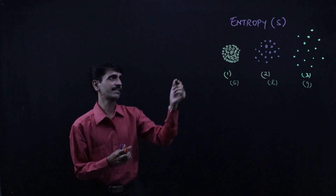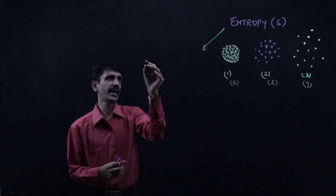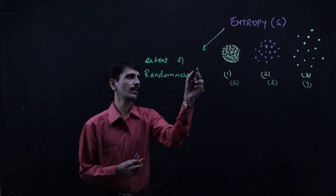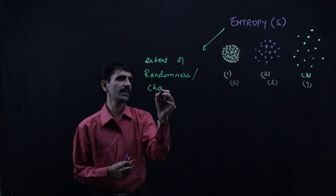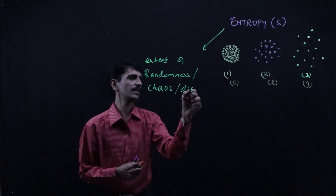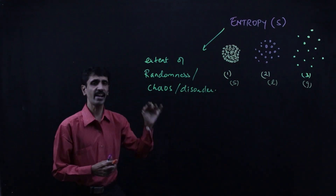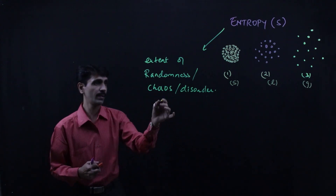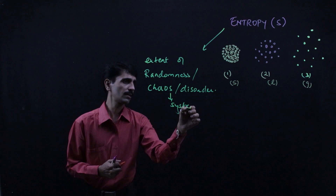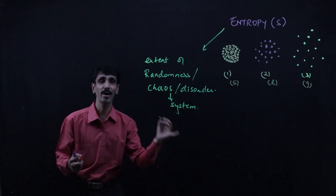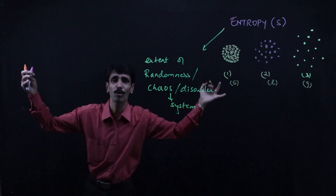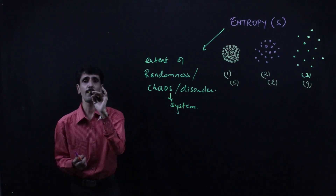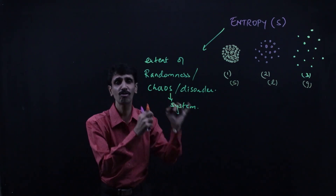Entropy is nothing but the extent of randomness. We also use the words chaos and disorder. So entropy is the extent of randomness — it is the measurement of the disorder in the system.